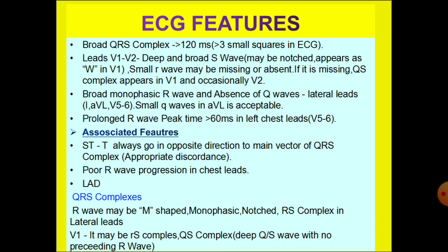ECG findings of Left Bundle Branch Block include a broad QRS complex that is more than 120ms, which is more than 3 small squares in ECG. In leads V1 and V2, a deep and broad S wave, which may be notched, appears as a W shape in lead V1.